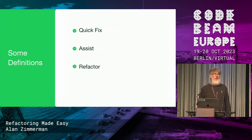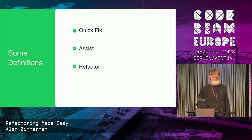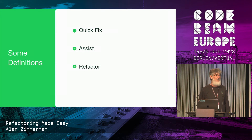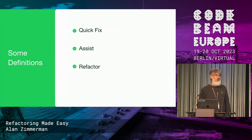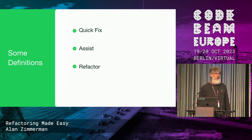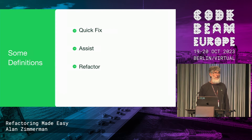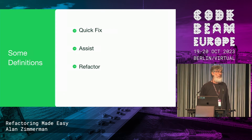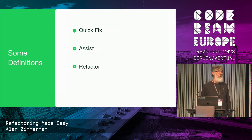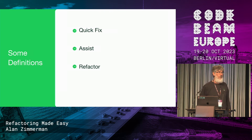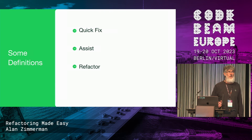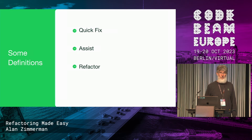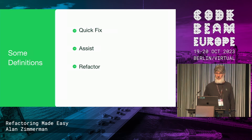Then you get an assist, which is something that will show up in the IDE because it has decided it can help you in some way. There are not necessarily guarantees to it — it will be like, if you want to, you have selected this body of text, you can extract it into a function. Not all of those are guarantees, but they do kind of help you move your code along.